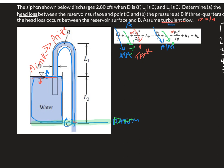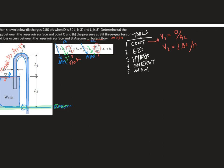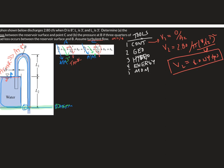We do need the velocity at C, so we use continuity: V = Q/A = 2.80 CFS divided by (π × (8/12 ft)² / 4). That gives V_C ≈ 8.0214 feet per second. We box that off and will plug it in when we return to the main equation. There is no pump and no turbine, so those terms are eliminated.